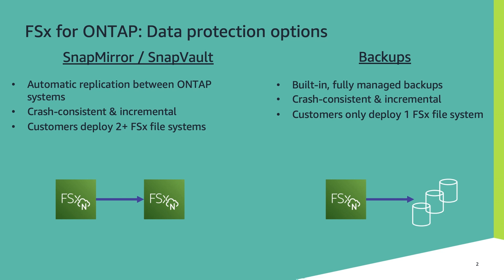SnapMirror within FSx ONTAP lets you replicate data from a primary file system to a secondary file system across different accounts or regions within AWS, or even from on-premises. It creates a replica of your primary storage for DR purposes, and that data gets mirrored at the volume level or at the block level. You can use SnapMirror when you want to set up a DR site in a different account or a different region.